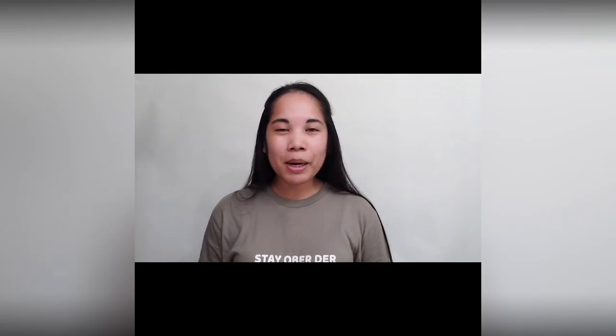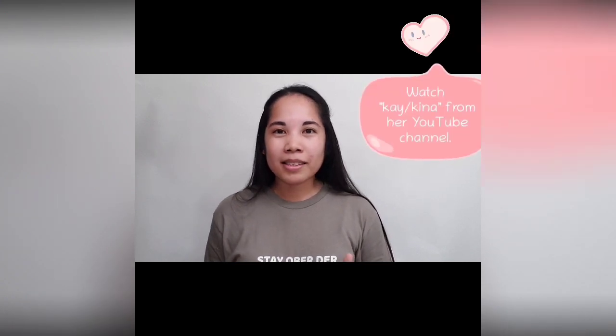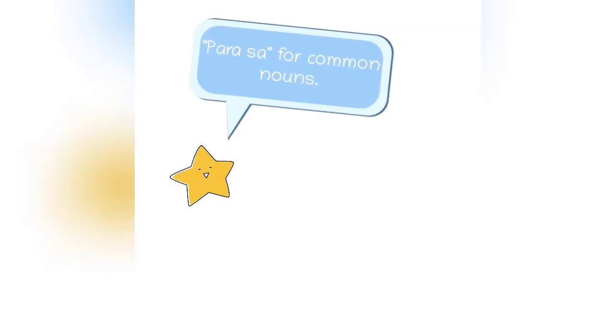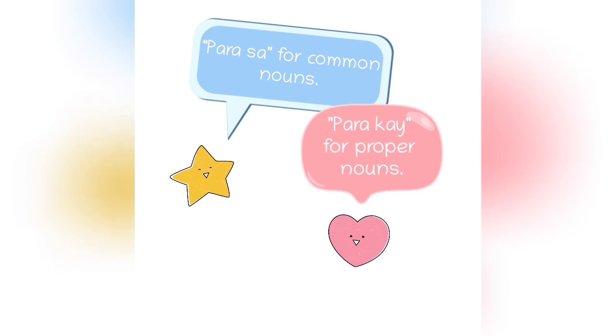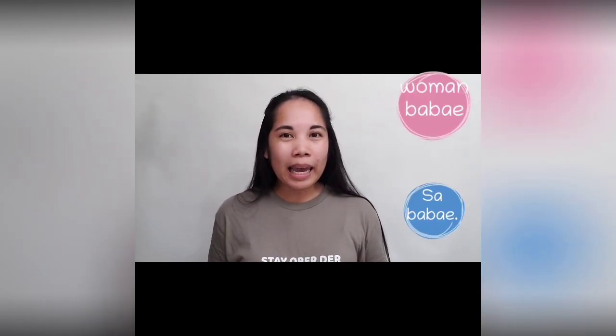Another thing about our Tagalog marker SA — just like our previous marker Kay — SA is used to answer the question 'whose.' Use para sa for common nouns and para kay for proper nouns. Example: para sa babae — babae means woman. If her name is Kara, then para kay Kara. Other examples: sa babae, sa pasyente, sa doktor, sa kliyente.